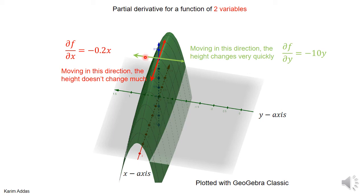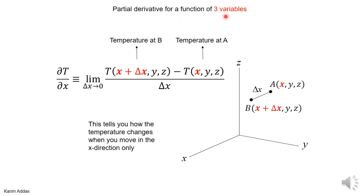Putting this back on the picture: in the x direction the slope is small, just 0.2x, while in the y direction the slope is large, 10 times y — confirming the slopes are different in different directions. Now, for a function of three variables, it's exactly the same idea. Go to point a with coordinates x, y, and z, then go to point b by only changing x and keeping y and z constant. Find the value of the function at b, subtract the value at a, divide by delta x, and let delta x go to zero.